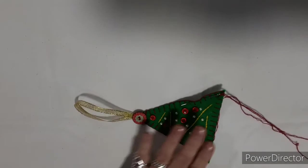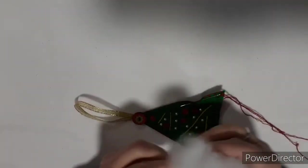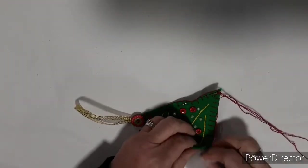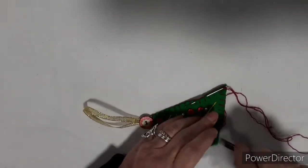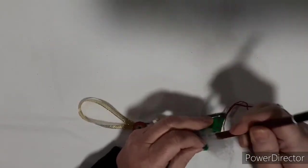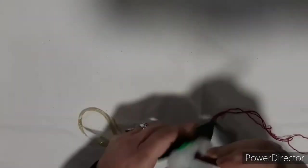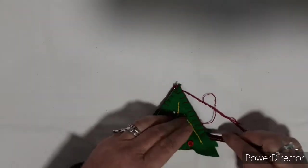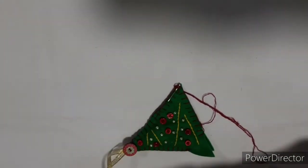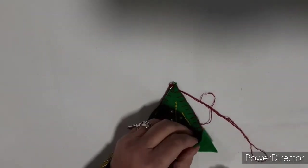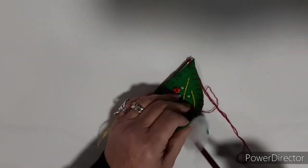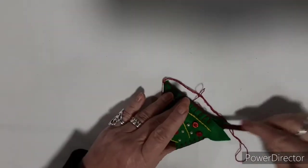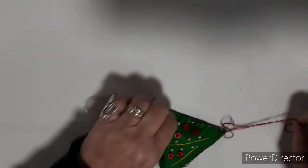Now I'm going to take some stuffing. It's the fluffy stuffing, not sage and onion or chestnut. It's just to pad it out. Poke it in with a pencil if you've got one. But if you've not got stuffing, it doesn't matter. You can just leave it flat. It's entirely up to you. Making sure you get it up into the corners. And that just pads it out a little bit.